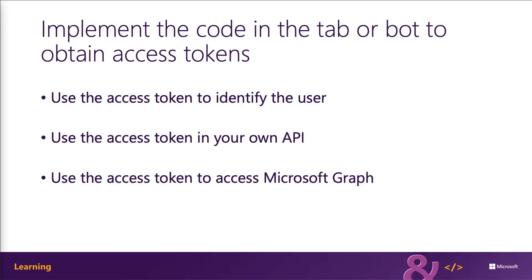The last step is to write the code that requests an access token from Azure AD for the current user. This token is only used to identify the user — it won't have any permissions for Microsoft Graph. Your app may need to identify the user, and in this case your app typically provides this token to your own back-end system that uses the token to store user preferences or other information specific to the currently signed-in user.